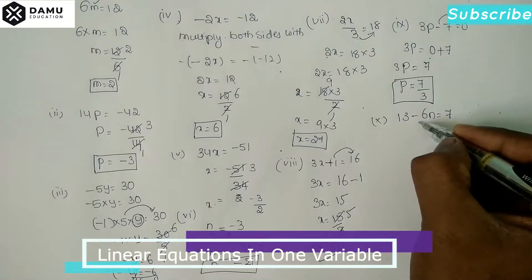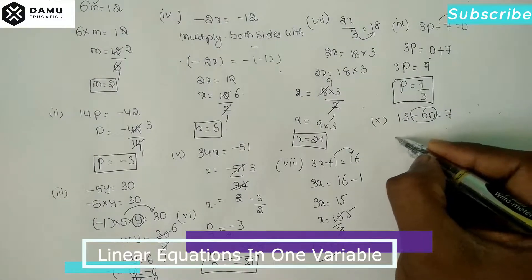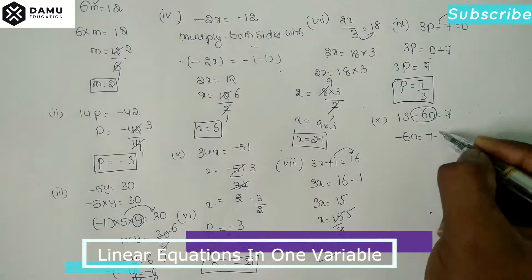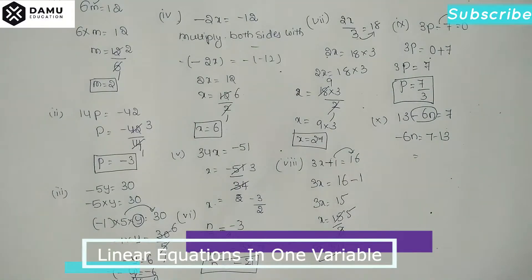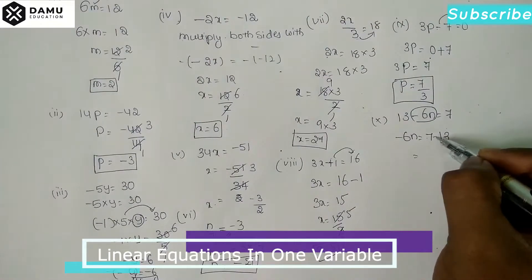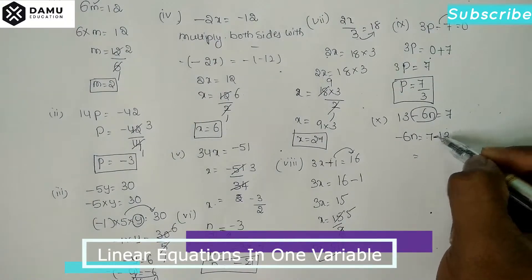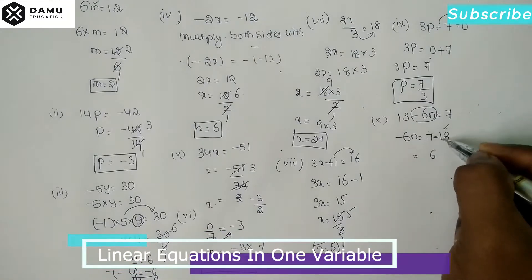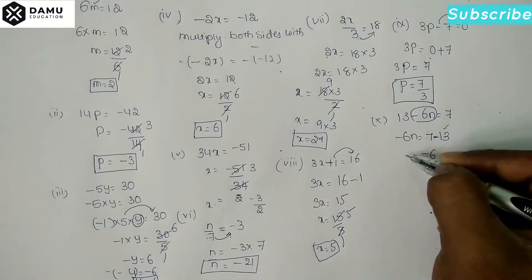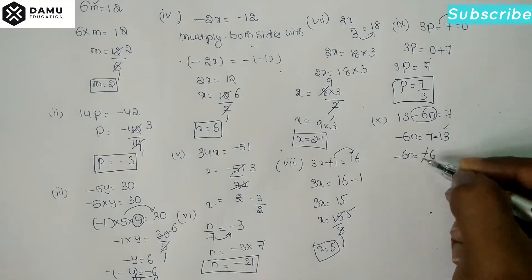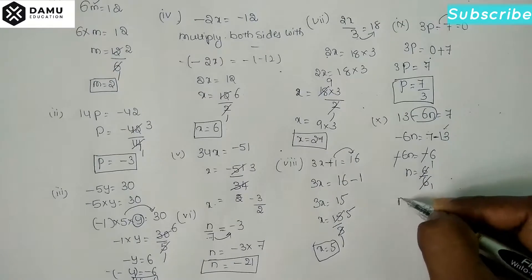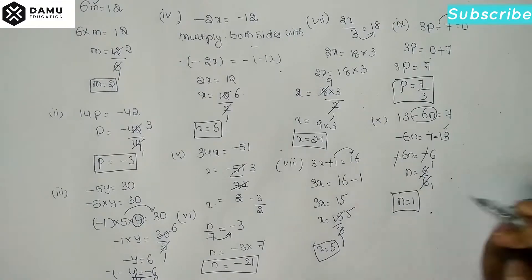The tenth one: 13 - 6n = 7. Keep -6n here; 13 shifts to the right side and becomes subtraction: -6n = 7 - 13 = -6. Dividing both sides by -6, the negatives cancel and n = 1. Thanks for watching, please subscribe.